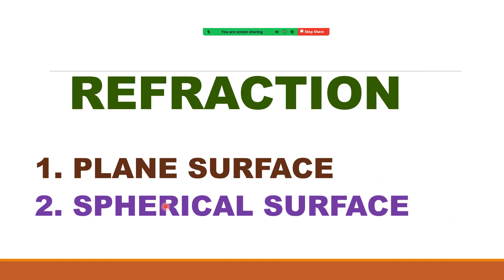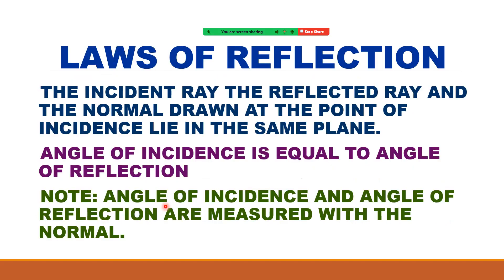Let us now look at reflection. The first law states that the incident ray, the reflected ray, and the normal drawn at the point of incidence all lie in the same plane. The second law states that the angle of incidence is equal to the angle of reflection.